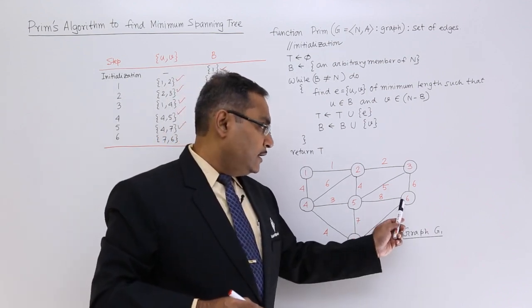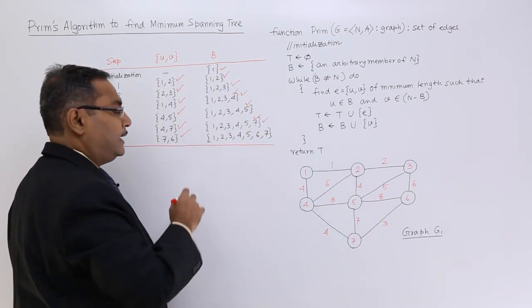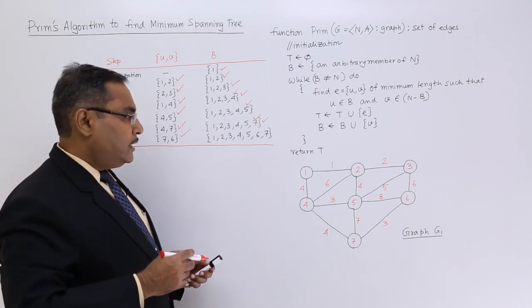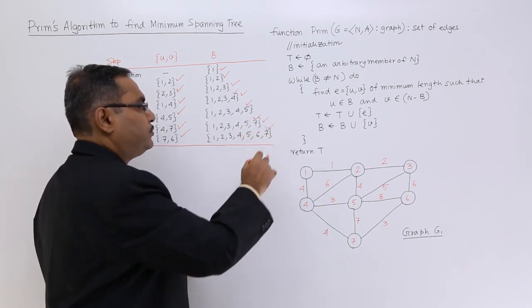I should consider this edge 6-7. I should consider edge 7-6 or 6-7 because they are undirected, so I am just taking this one here.